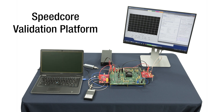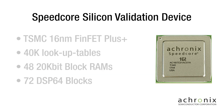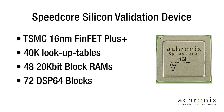This platform includes Acronix's ACE design tools which support this SpeedCore instance, a test characterization board with Acronix's 16nm SpeedCore silicon validation device, and a demonstration design running on the device highlighting some of the SpeedCore capabilities. The silicon validation device is fabricated on TSMC's 16nm FinFET Plus GL process and has a high-performance SpeedCore eFPGA core with 40,000 lookup tables, 48 20kbit block RAMs, and 72 DSP64 blocks.